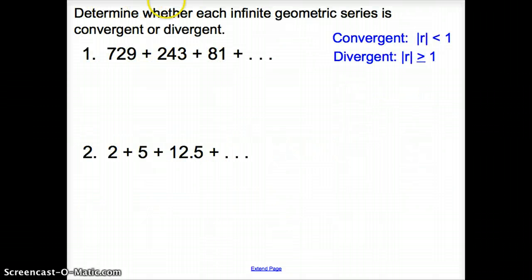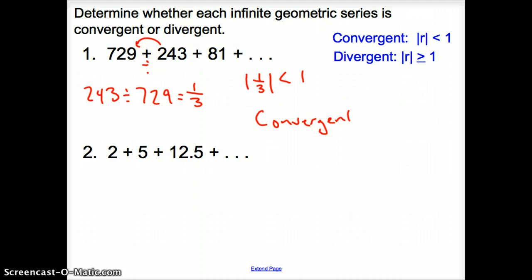So now we're asked to determine whether each infinite geometric series is convergent or divergent. Well, we have to figure out if R is bigger than or less than 1. And how do we find our R in a geometric series? We go backwards, correct? So we have to take this 243 and divide it by 729. So we have 243, we divide it by 729. That gives us 0.3 repeating or 1 third. And so the absolute value of 1/3 is less than 1. So that means we have a convergent series.